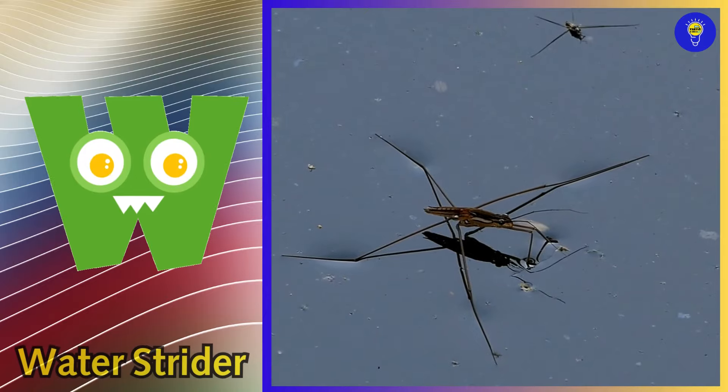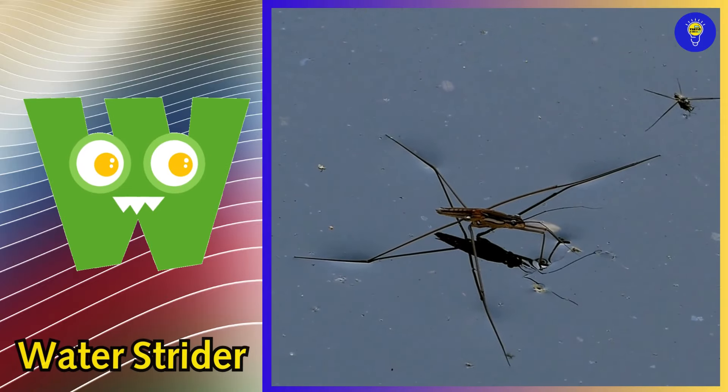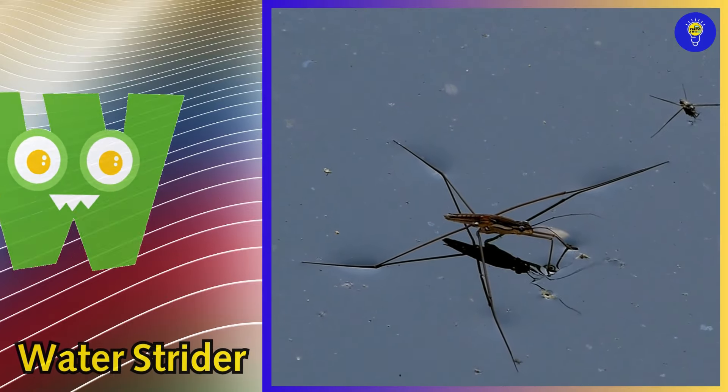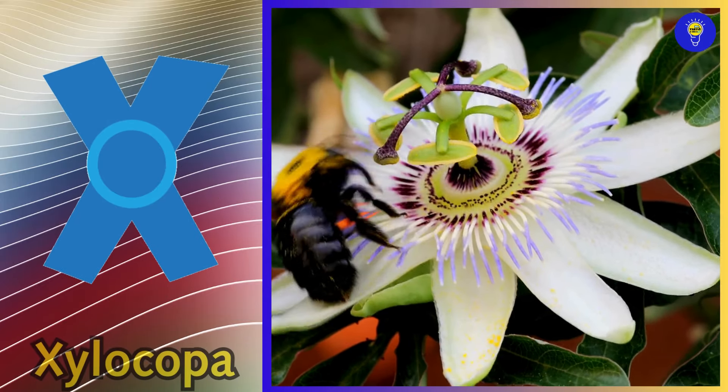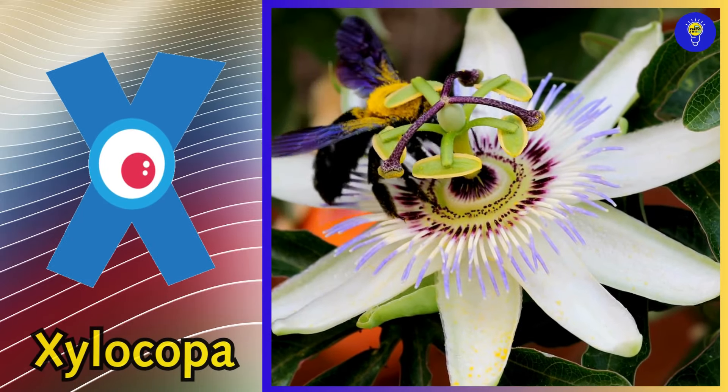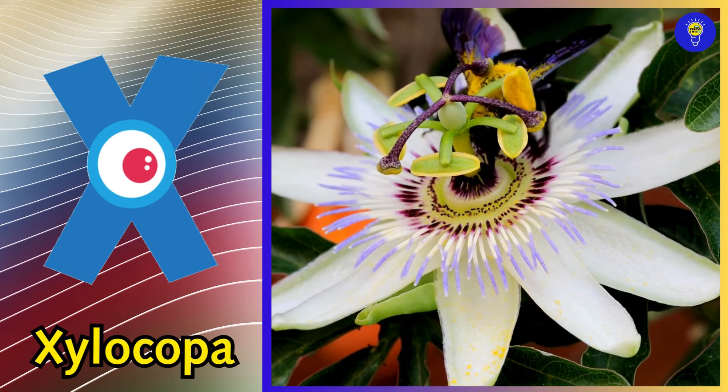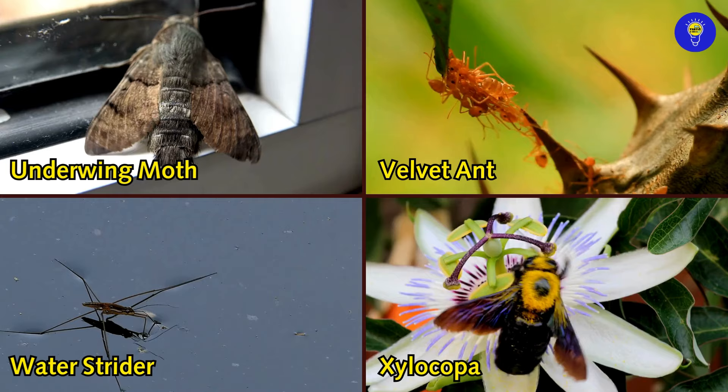W is for water strider, w, w, water strider. X is for Xylocopa, x, x, Xylocopa.